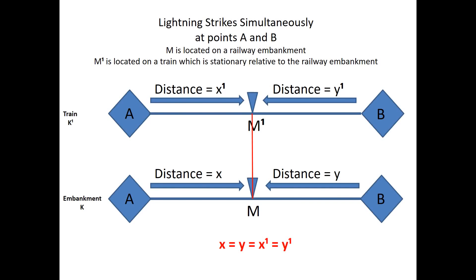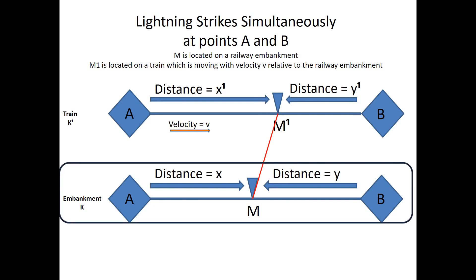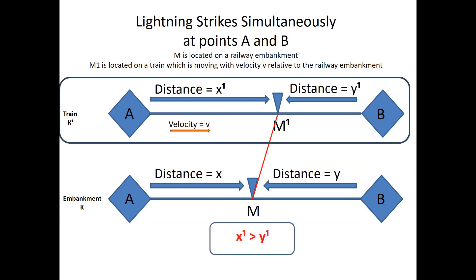Instead of the stationary train, we now have the train moving with velocity V. Nothing has changed from the perception of the observer on the embankment coordinate system — distance X still equals Y and the lightning strikes are still simultaneous. However, for the observer at M1 on the train, the light travelling from A to M1 now has a further distance to travel than the light travelling from B to M1. This is because the train has moved since the lightning strike took place, so X1 is now greater than Y1. Because light travels at a constant speed, the light from A will reach M1 later than the light from B. Therefore, the observer at M1 will perceive that the two lightning strikes are not simultaneous.